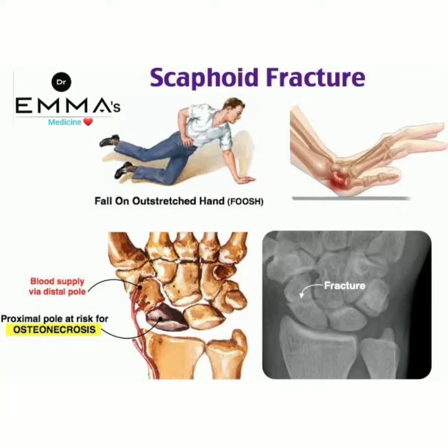Assalamu Alaikum dear viewers. In this video I am discussing scaphoid fracture — that means a fracture occurring on the scaphoid bone. Look at this image: the man falls on an outstretched hand, in short called FOOSH (Fall On OutStretched Hand). If a man falls in that way, a scaphoid fracture may occur.